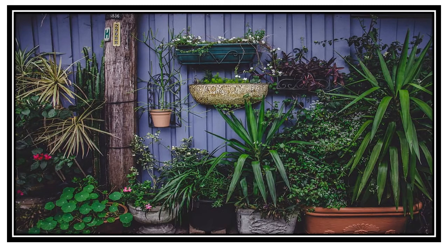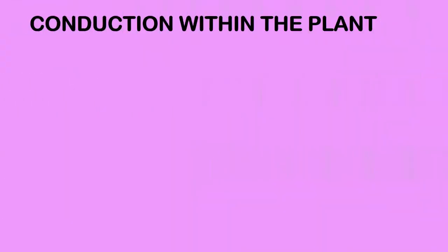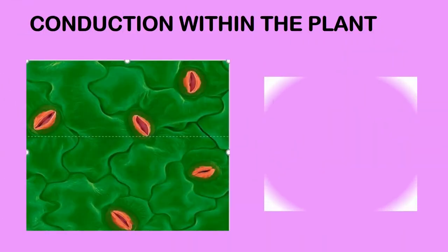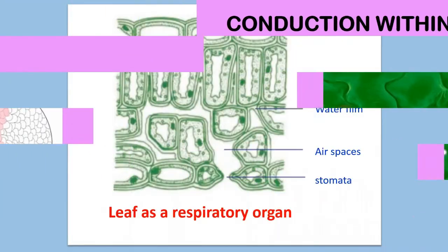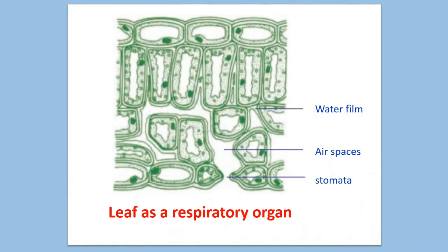Conduction within the plant: the stomata opening leads to a series of open spaces between the cells of the plant. These open spaces form a continuous network all over the plant. These spaces are known as air spaces. Air spaces are very large in the leaves and smaller in other parts of the plant.